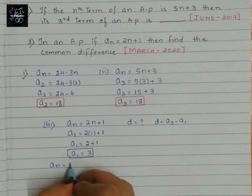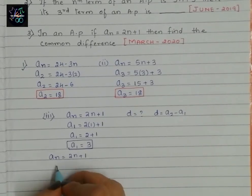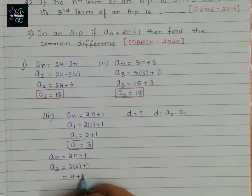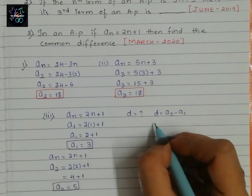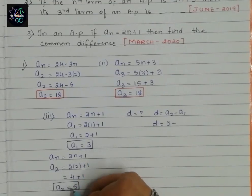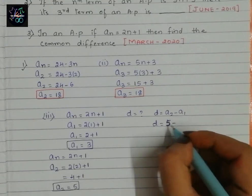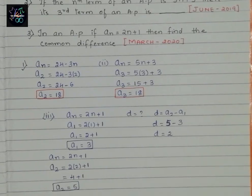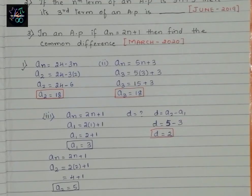Using an equals 2n plus 1, a2 equals 2 times 2 plus 1, which is 4 plus 1, so a2 equals 5. Now the common difference d equals a2 minus a1, that is 5 minus 3, so d equals 2. The common difference is 2. This completes our Day 1 questions for the Passing Package. In my next video I will cover more sure questions for board examination. Please like, share, and subscribe to my channel. Thank you.